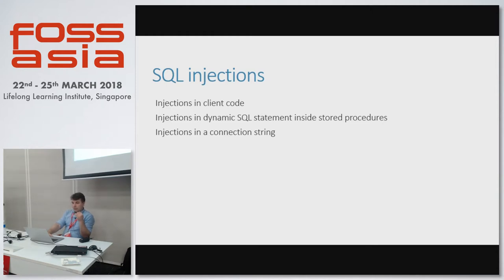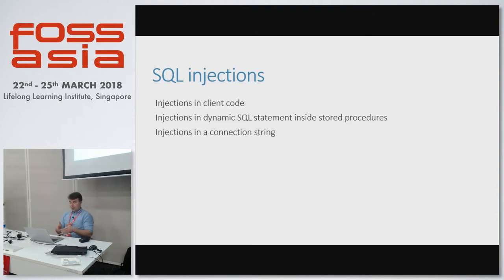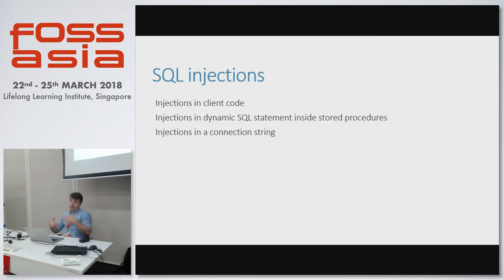Another one is SQL injection in connection strings — not SQL itself, but for example I've seen cases where a connection string takes a database username and password, and if you have a shared database account that works across different databases, say staging and production on the same environment, someone could inject a database name into your connection string and then access the production server using the staging codebase. Who knows what could happen.